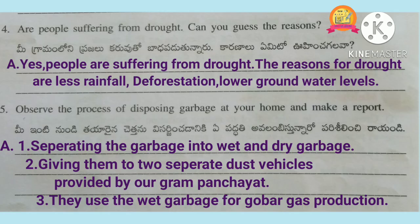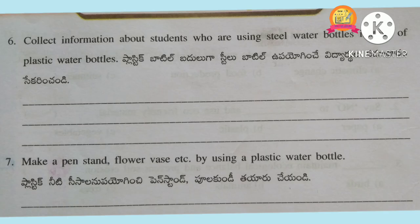Fifth question: observe the process of disposing garbage at your home and make a report. Separating the garbage into wet and dry garbage, giving them to two separate dust vehicles provided by our Gram Panchayat. They use the wet garbage for gobar gas production. Seventh question: make a pen stand, flower vase, etc. by using a plastic water bottle.